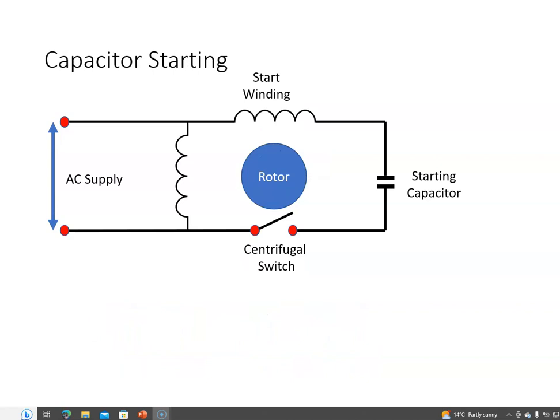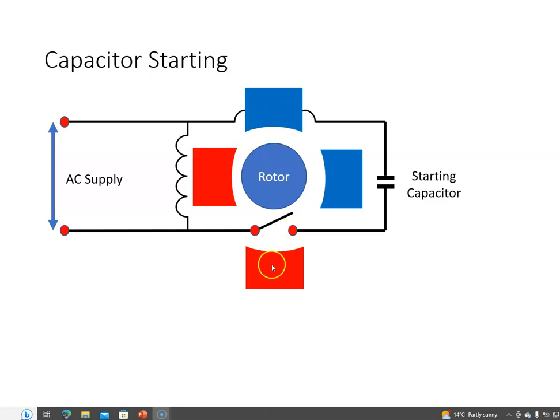When we add the start winding and the capacitor, the values are chosen so that current flowing in this branch of the motor is 90 degrees out from the current in this branch, and the effect of that is that it gives me a second electromagnet 90 degrees removed. And when we add these magnetic fields together,